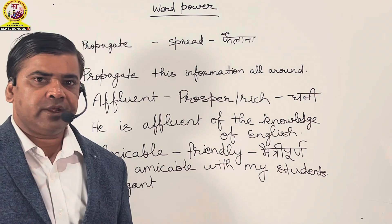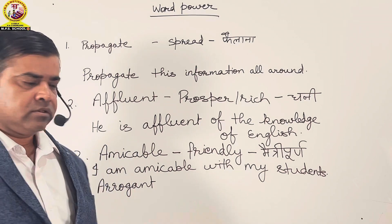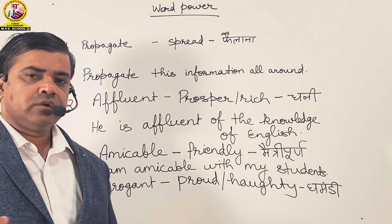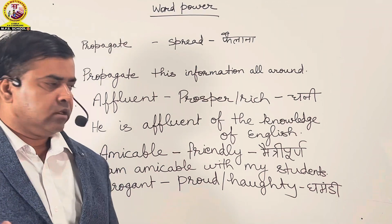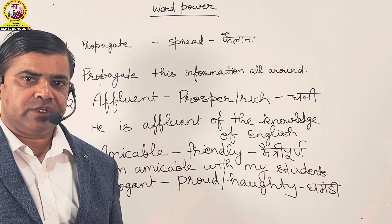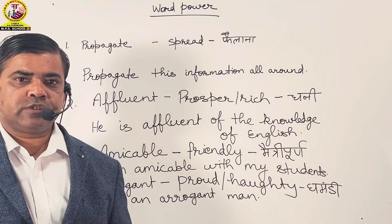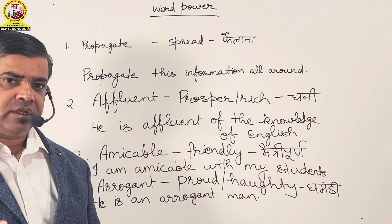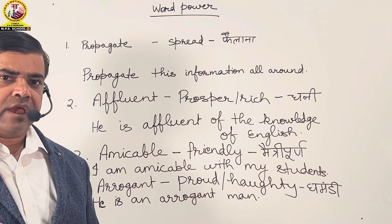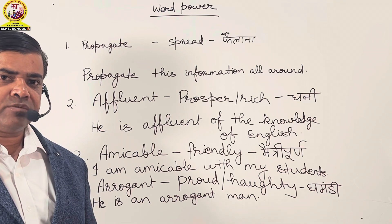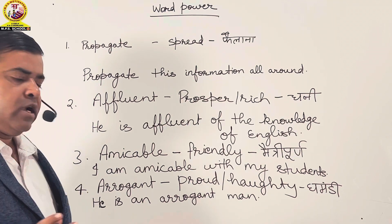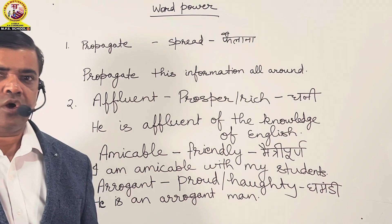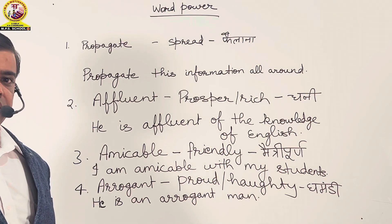Our fourth word is 'Arrogant'. Its synonym is proud or haughty, which means ghamandi. Friends, I have used this word in a sentence. The sentence is: He is an arrogant man. Vah ek ghamandi aadmi hai. Friends, now you can take its screenshot or write it down in your notebook.